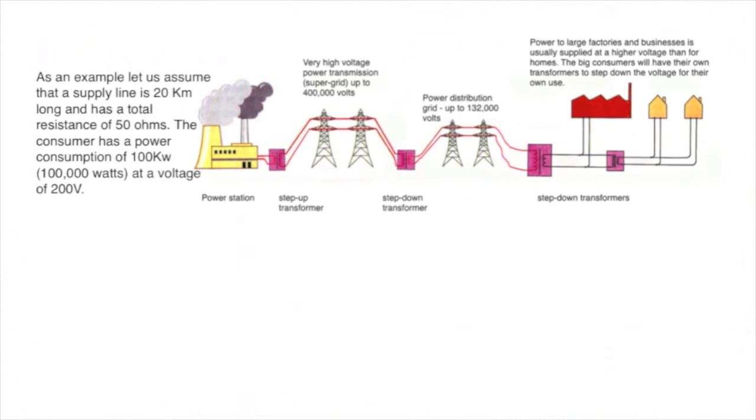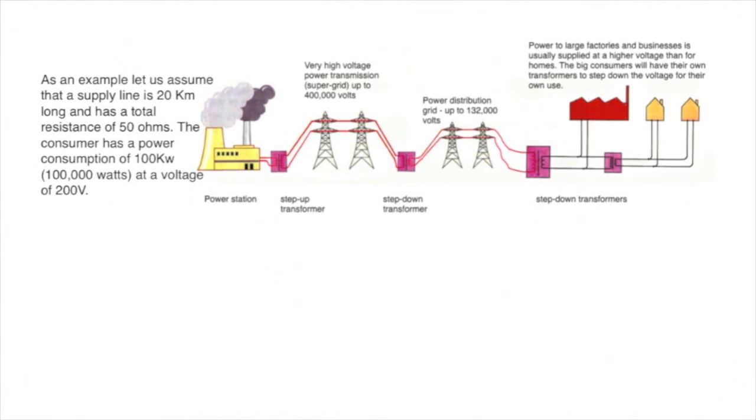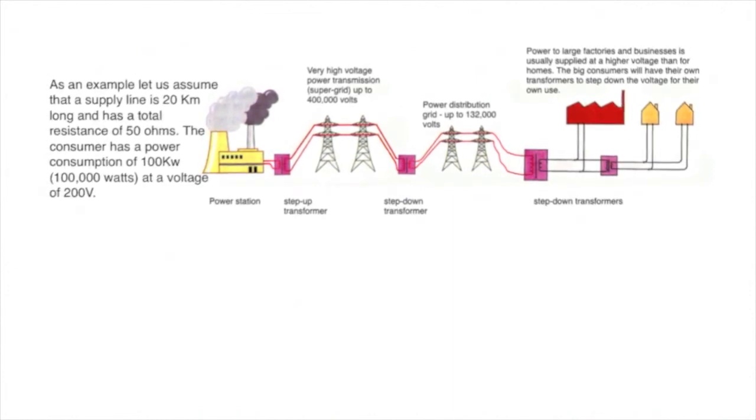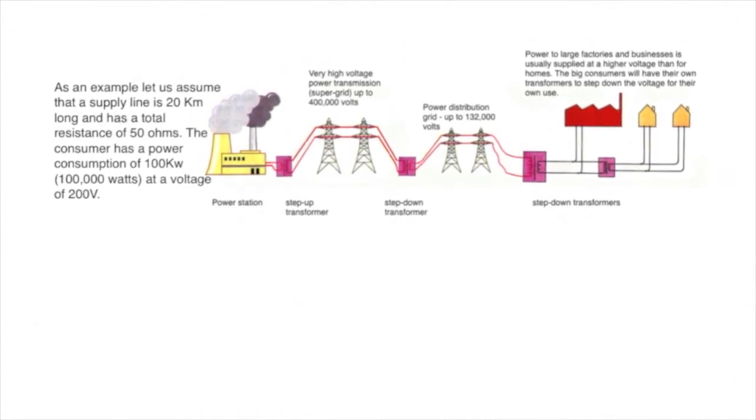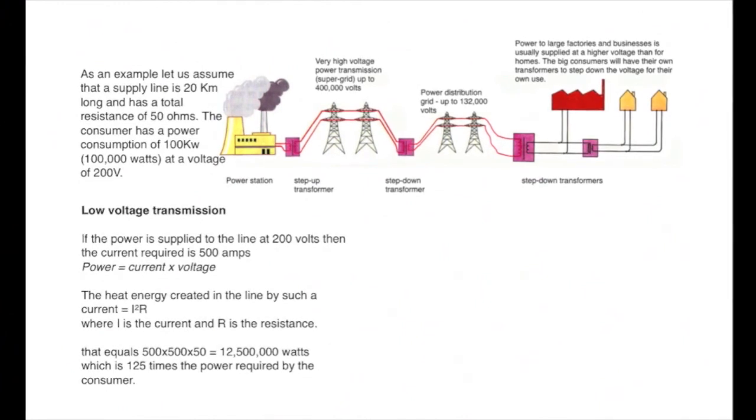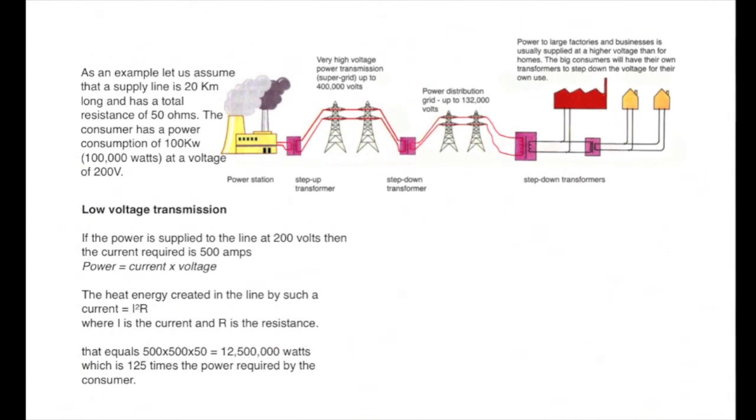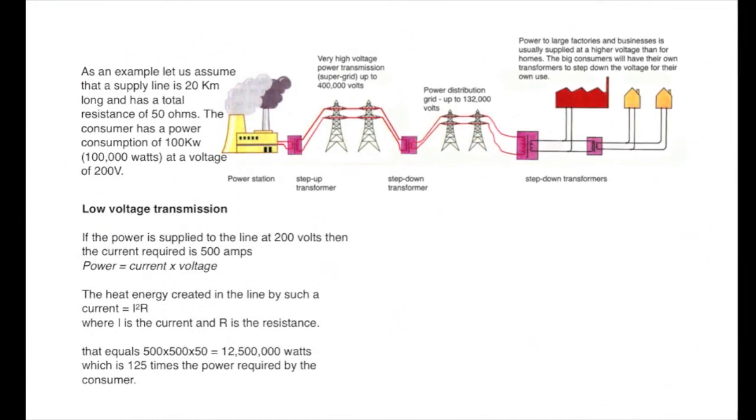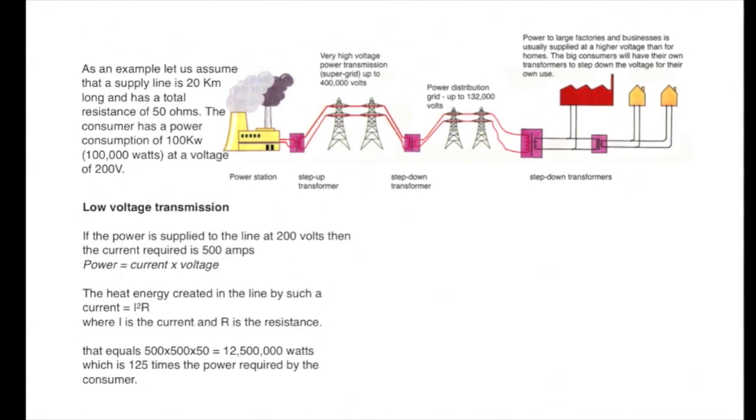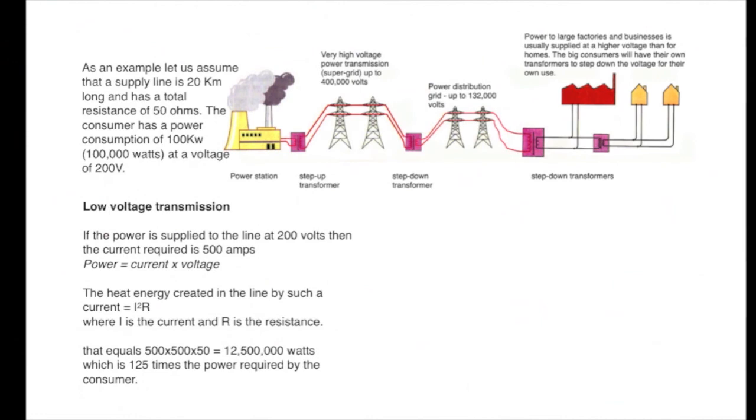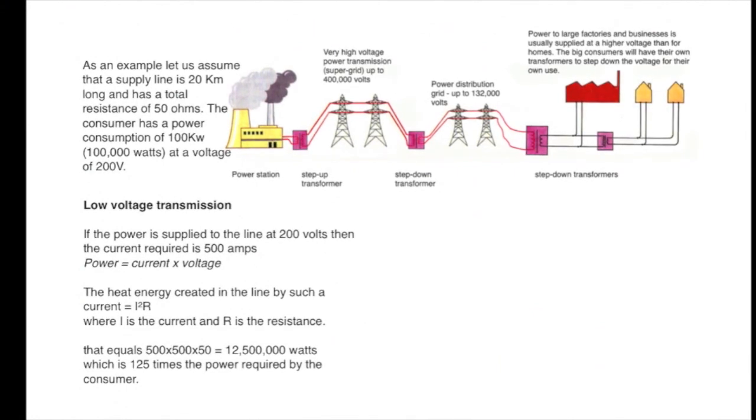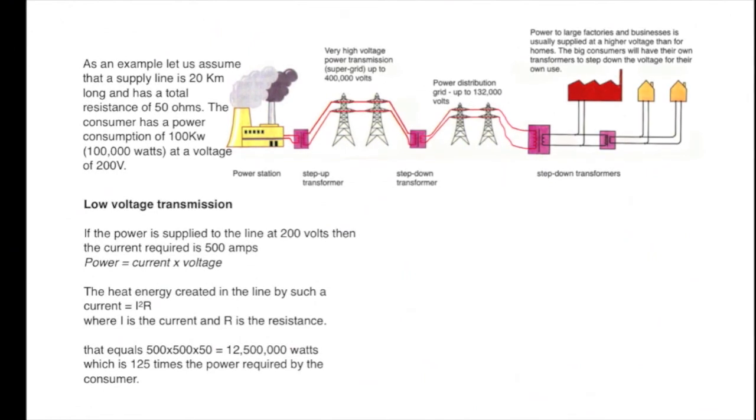To explain why all this has to be done, let's go through a couple of simple calculations. Suppose we have a supply line from a power station, many kilometers long, with a resistance of 50 ohms. The consumer has a power requirement of 100 kilowatts, that's 100,000 watts, at a voltage of 200 volts. If the power is supplied to the line at a voltage of 200 volts, then the current required to be pushed through that power line is 500 amps. That's from the equation power equals current times voltage. Now, when an electric current travels through a conductor, it causes heating due to the resistance, and the heating is equal to I squared R, where I is the current and R is the resistance. I squared R in this case is 500 squared times 50, which is 12,500,000 watts, far in excess of the power that the customer actually requires. A huge amount of energy would be wasted in the transmission. It would not be economical to supply it.